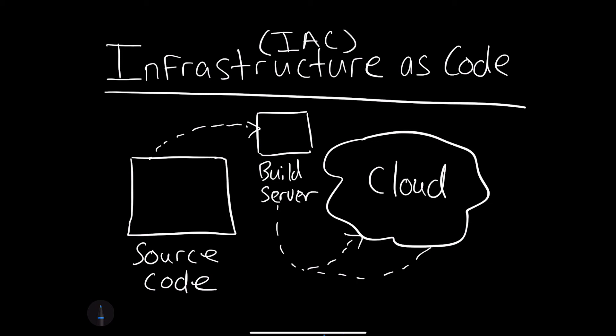What is infrastructure as code? Infrastructure as code is literally the infrastructure checked in alongside the source code of your project.